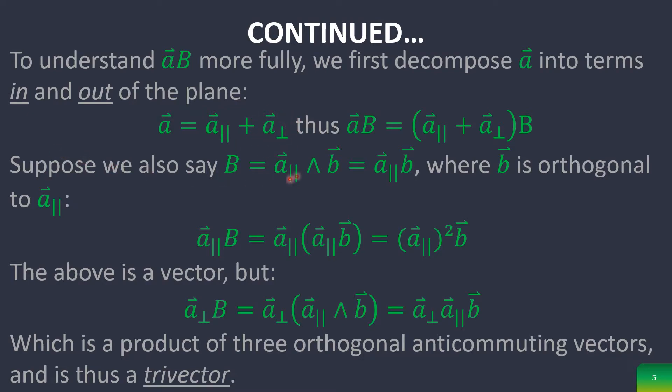And then we can always find a vector B such that A parallel wedge B is equal to bivector B. And this shows us that the product between A parallel to B is just a vector that is dilated by the magnitude of the vector squared.